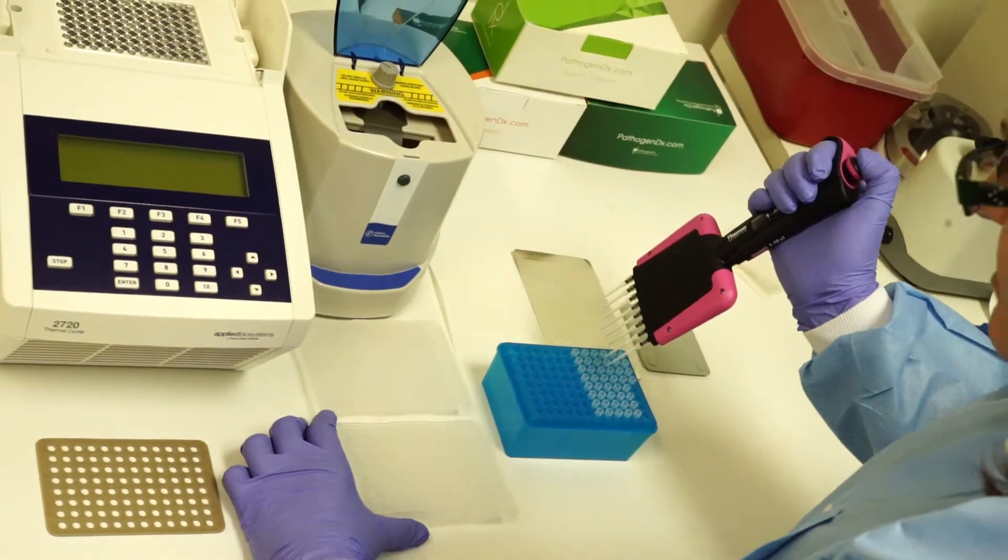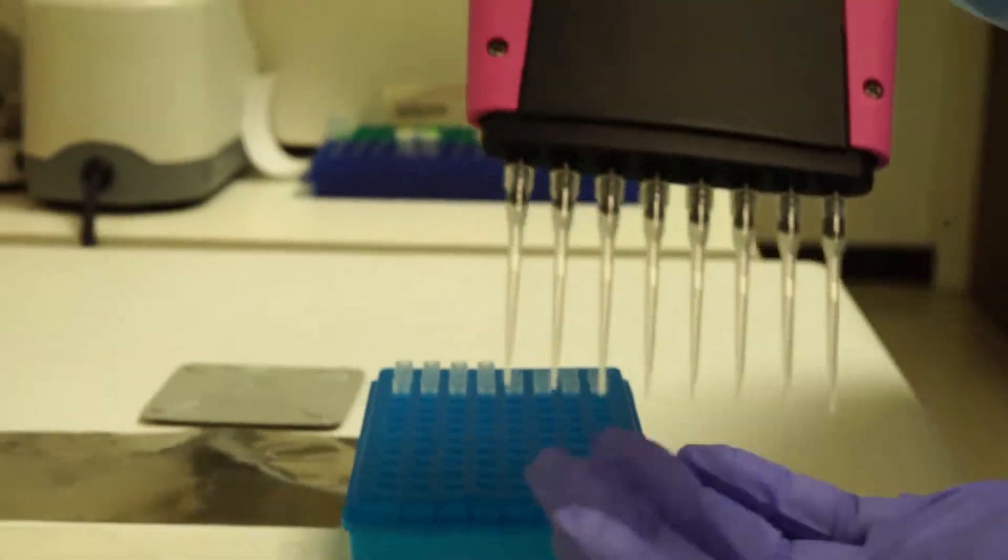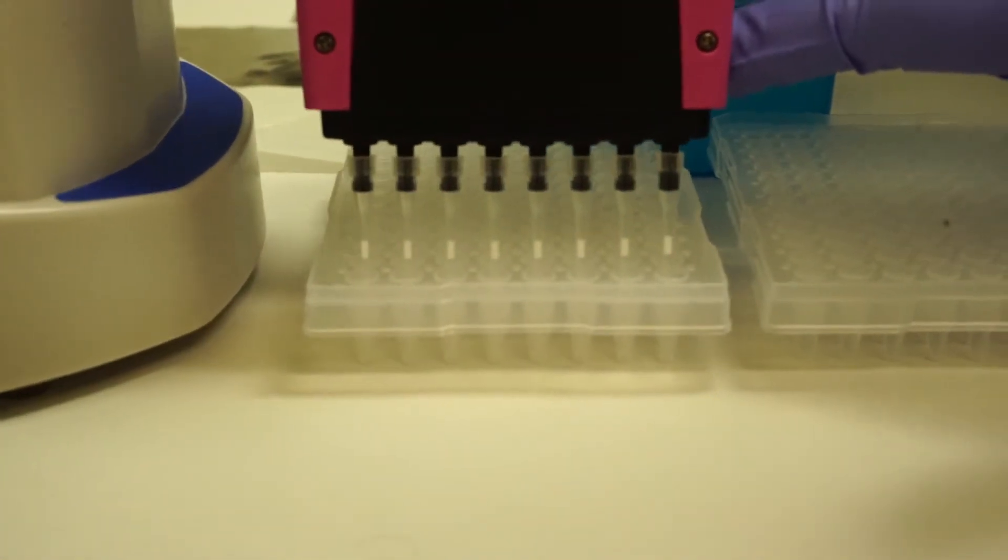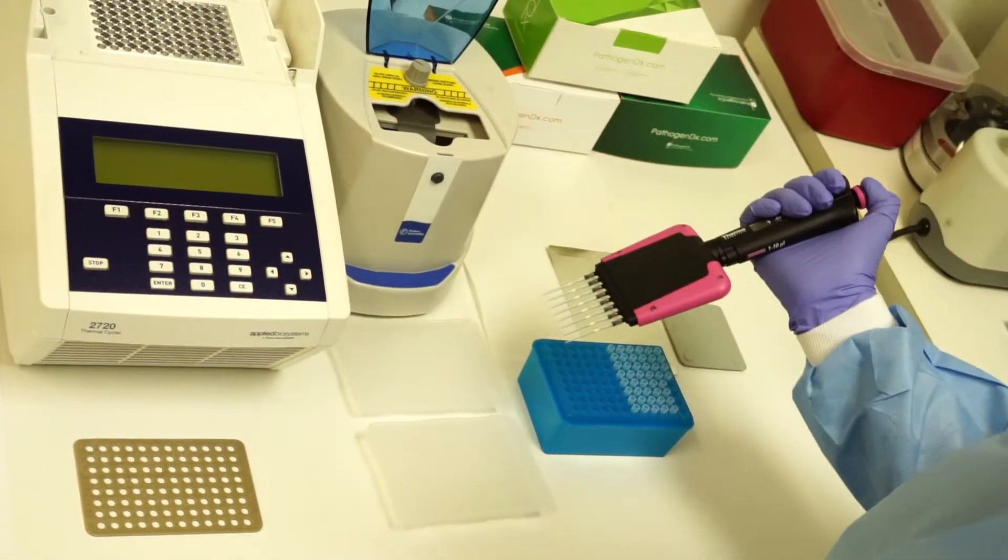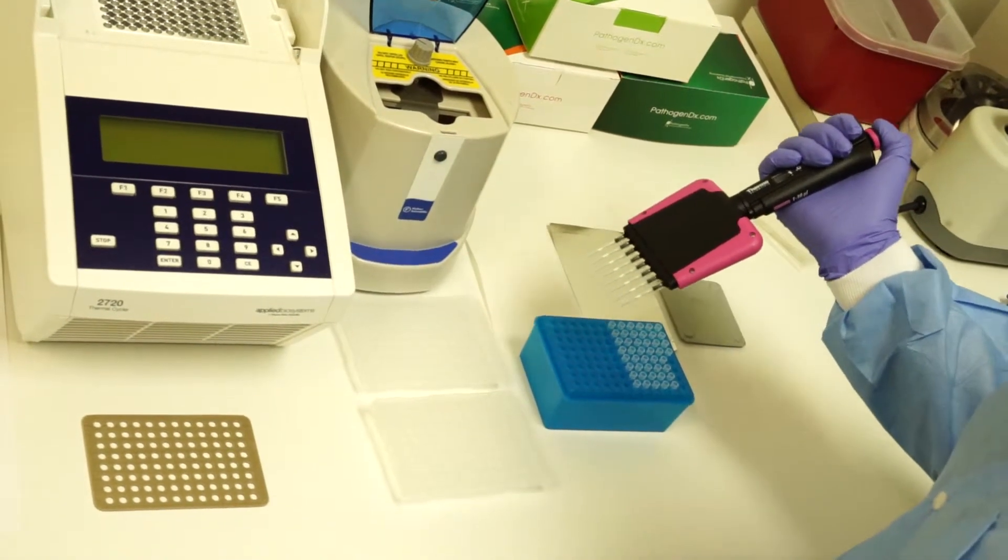Once the seal has been removed, pipette one microliter from the loci PCR plate directly into the labeling PCR well. Ensure that bacterial samples are added to bacterial samples and fungal samples are added to fungal samples to avoid any contamination issues.